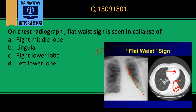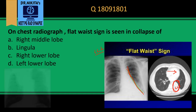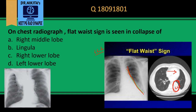The next important sign is the Golden S or reverse Golden S sign. The reverse S shape is formed in right upper lobe collapse, where the fissure is pulled due to collapse and a mass pushes the fissure downward.